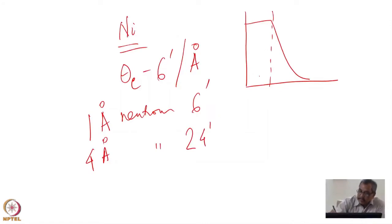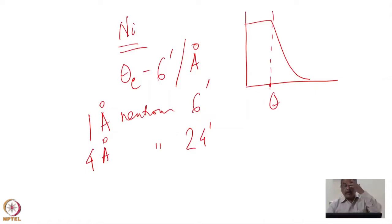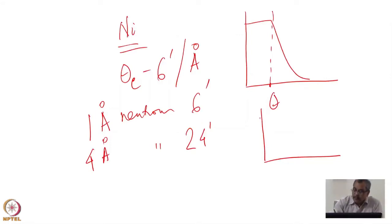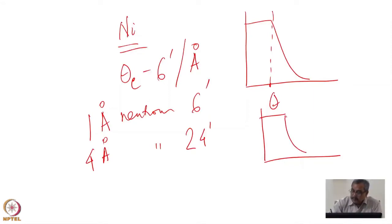The critical angle theta for a 4 angstrom neutron will be 24 arc minutes. Also, if I magnetize a nickel medium — usually it is in the form of thin films — then for the magnetization direction with respect to neutron spin, we will have two different critical angles.